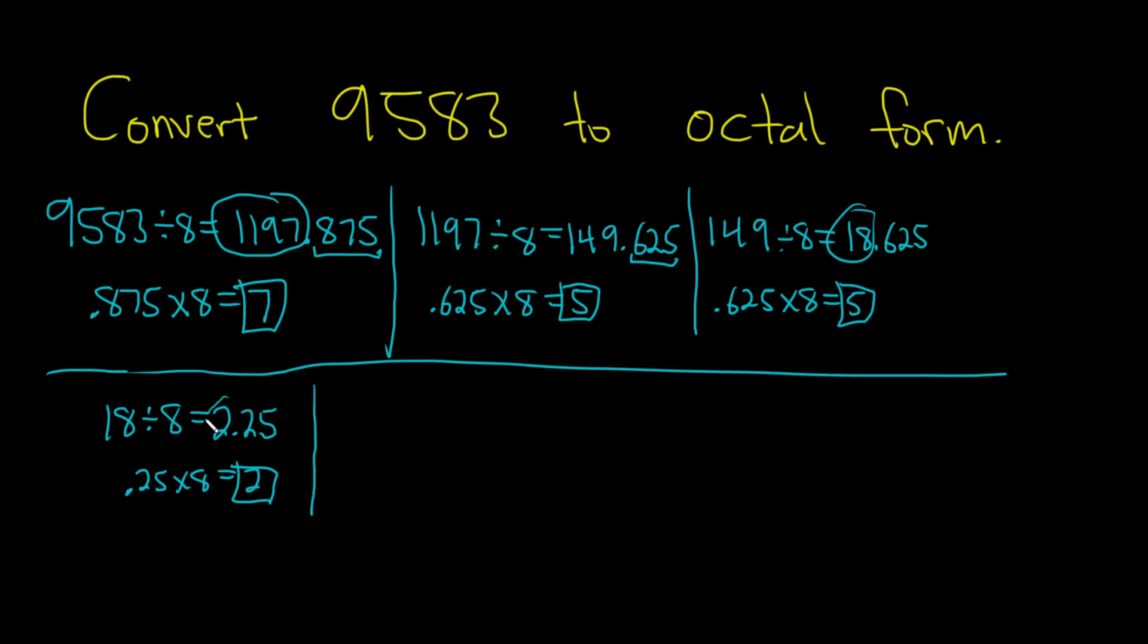And we do it again. We take 2, we divide it by 8. So 2 divided by 8. This is equal to 0.25. We want the remainder, so you just take 0.25, multiply it by 8, 0.25 times 8. We get a remainder of 2.